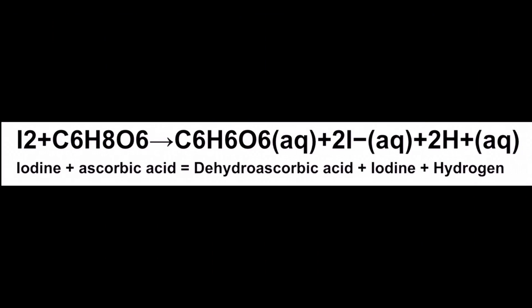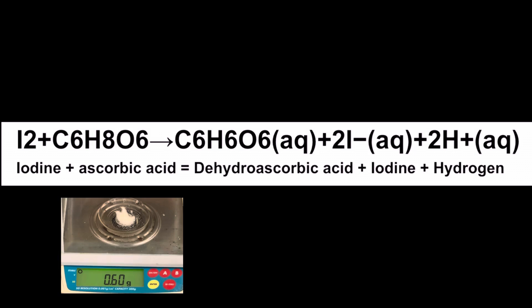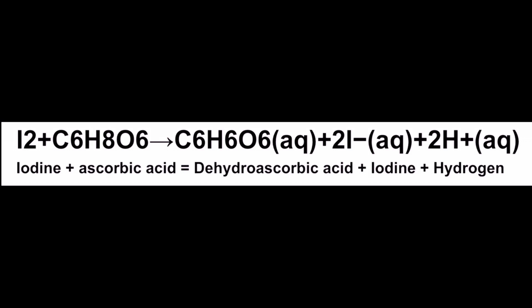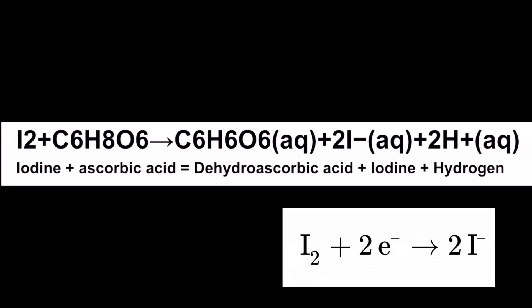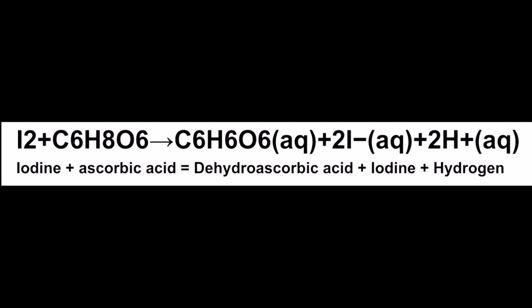Here's the chemical equation for this redox reaction. We start with the reactants: iodine I2, and ascorbic acid C6H8O6, also known as vitamin C. When combined in aqueous solution, we get the products: dehydroascorbic acid C6H6O6, 2 moles of iodide 2I, and 2 moles of hydrogen 2H. In this reaction, iodine is reduced as it gains electrons, and the ascorbic acid is oxidized as it loses two electrons.